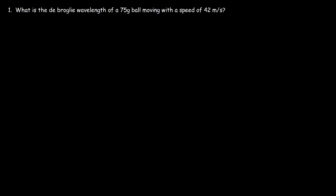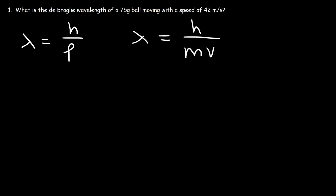Here's a question: what is the de Broglie wavelength of a 75 gram ball moving with a speed of 42 meters per second? How can we calculate it? The wavelength of a moving object is equal to Planck's constant divided by the momentum of the object, and momentum is mass times velocity.